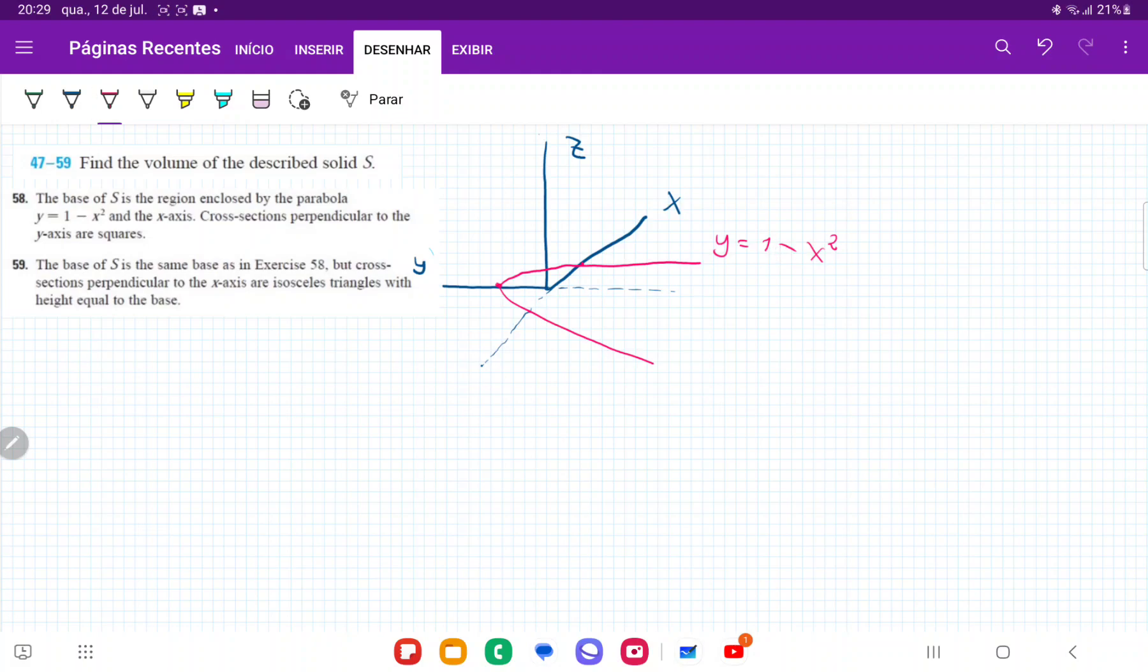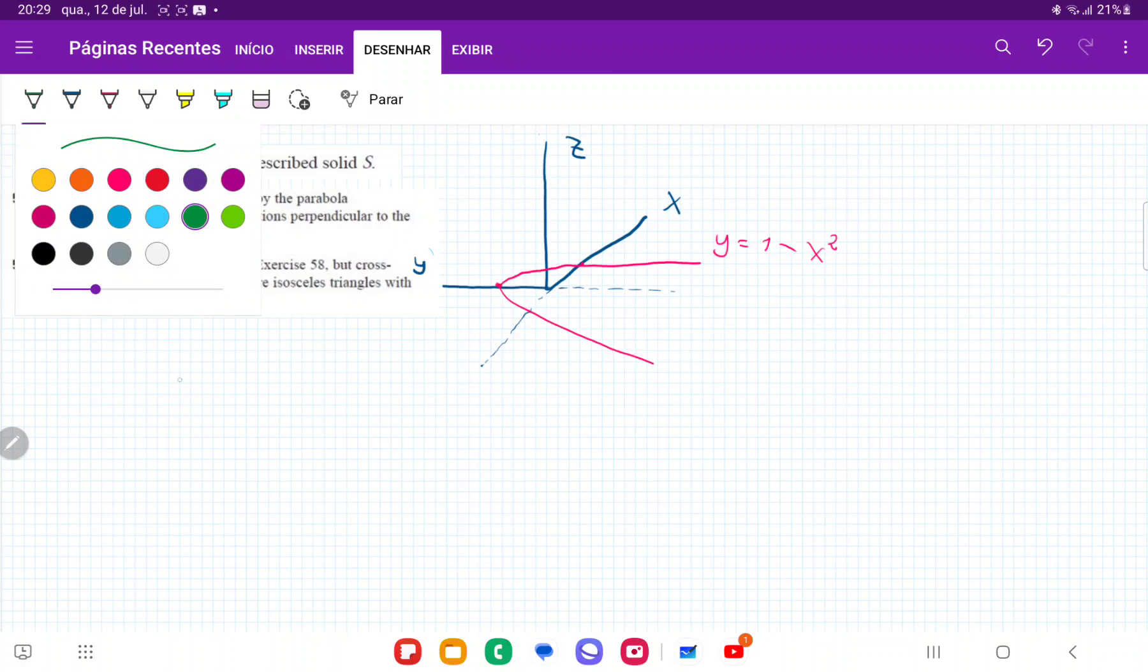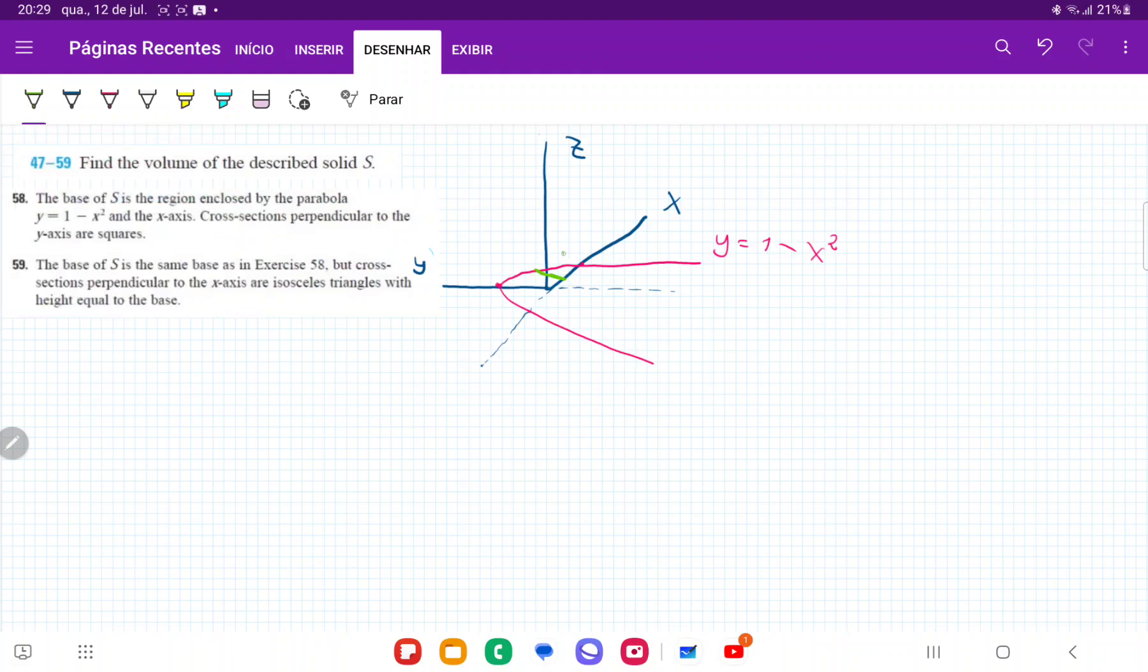And now the cross-sections are isosceles triangles with height equal to the base perpendicular to the x-axis. So they are going to look like this. They're going to be isosceles triangles, where at the base it goes like this, and then basically we're adding them up across the x-axis to form a volume.